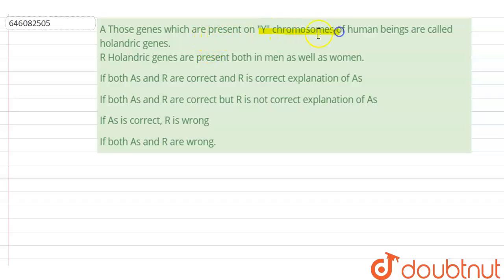Those genes which are present in Y chromosome of human beings are called holandric genes. Reason: holandric genes are present both in men as well as women.